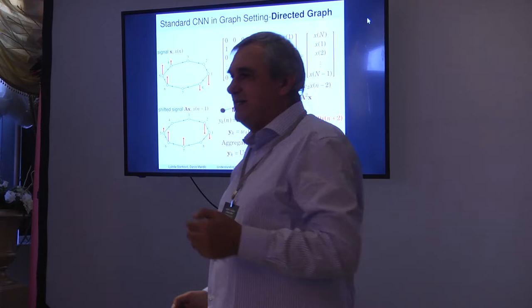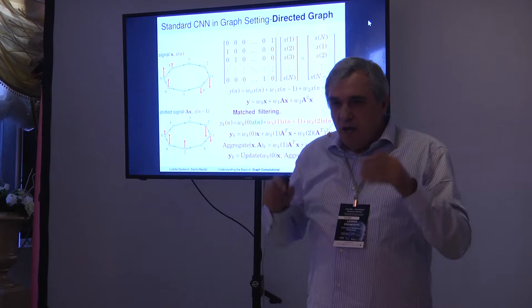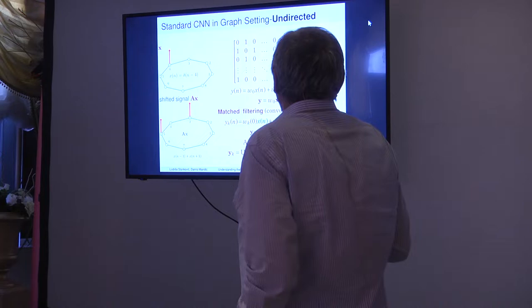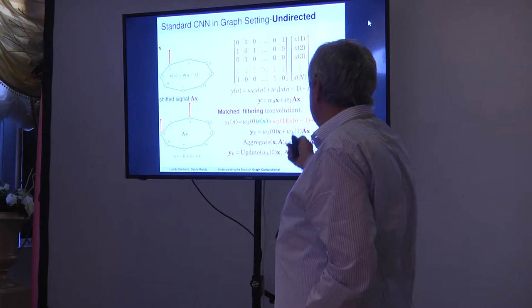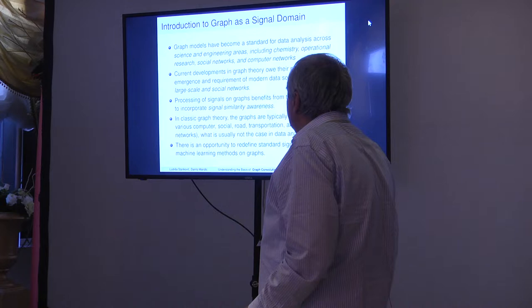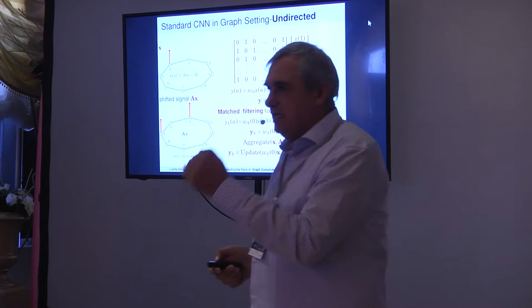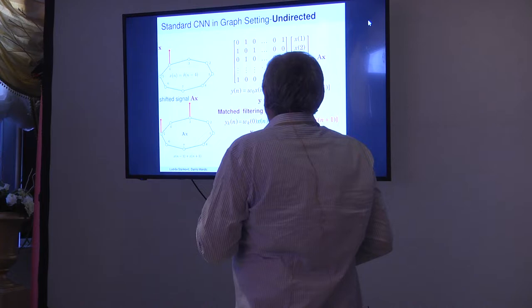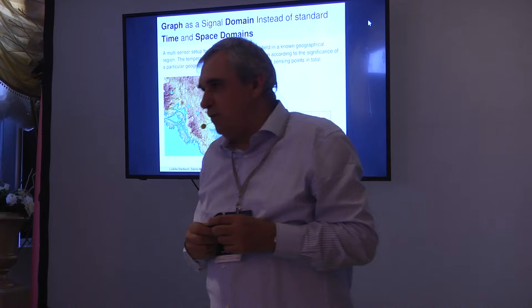In graph terminology, filtering — specifically match filtering, which is one kernel of a convolutional neural network — is: shifting the signal, multiplying by the coefficients, and adding to the original signal. This addition of shifted signals is the aggregate phase; adding to the original signal is the update phase. The same will be done in graph convolutional networks — only matrix A will change. So if you understand how this works in the standard convolutional neural network and this kind of notation, nothing changes for graph convolutional networks. The same can also be done for undirected shift, yielding symmetric matrices reducible to standard Fourier analysis.